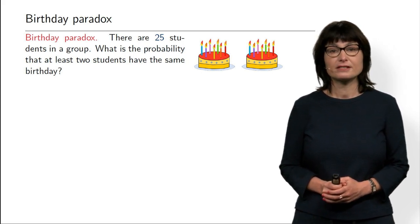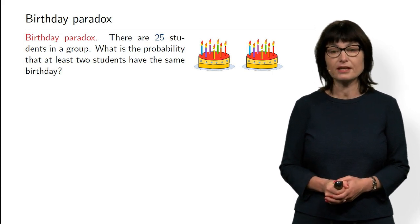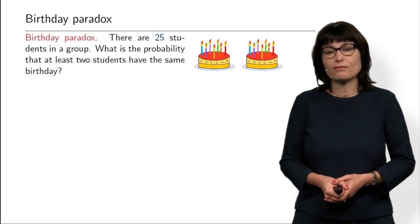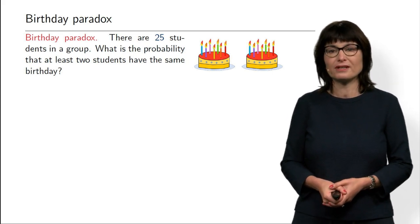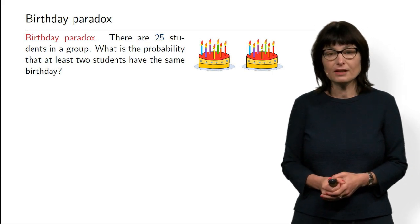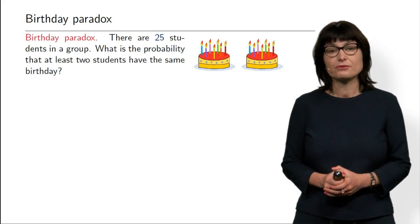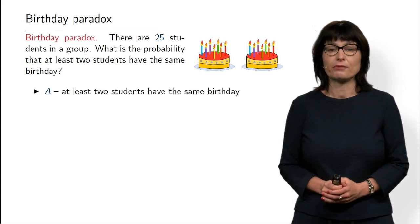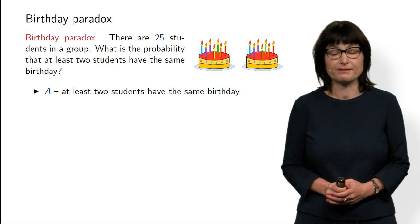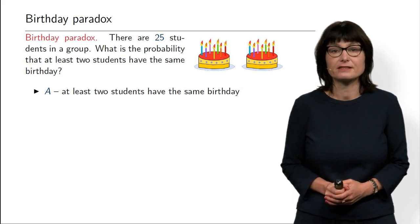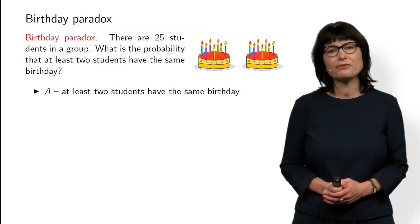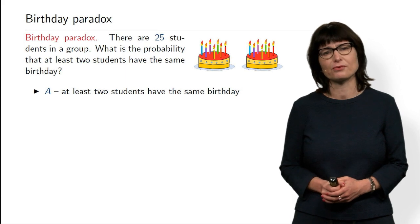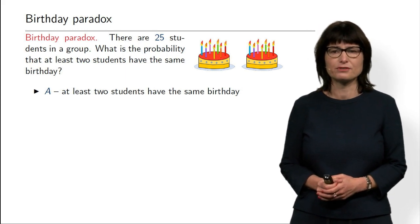You would say there are 365 days in a year, so each of 25 students has a lot of choice for their birthdays. It seems not very likely that two of them have a birthday on the same day. Let's see what it is in reality when we try to compute it. We are interested in event A: that at least two students have the same birthday. It's not very easy to compute directly because it could be two students, three, four, or maybe two different pairs.